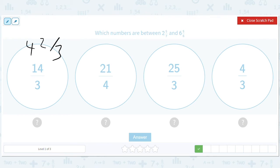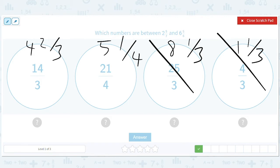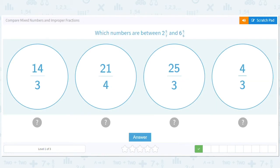Twenty-one-fourths is five and one-fourth. Twenty-five-thirds is eight and one-third. And four-thirds is one and one-third. Okay. That's too small. That's too big. These guys seem good. So we'll do this one and this one.